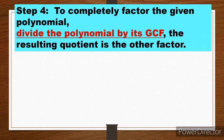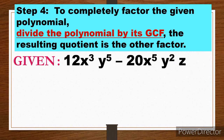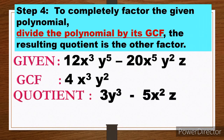Step 4: to completely factor the polynomial, divide the polynomial by its GCF. The resulting quotient is the other factor. We have 12x³y⁵ minus 20x⁵y²z divided by GCF 4x³y². For the first term: 12 ÷ 4 = 3. x³ ÷ x³: subtract exponents, 3 − 3 = 0, so x cancels. y⁵ ÷ y²: 5 − 2 = 3, giving 3y³.